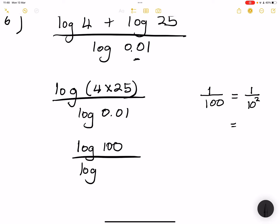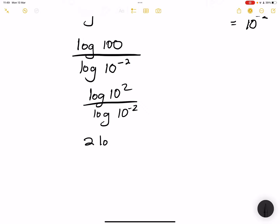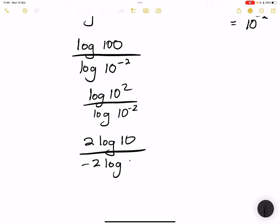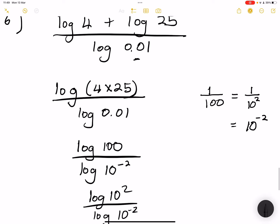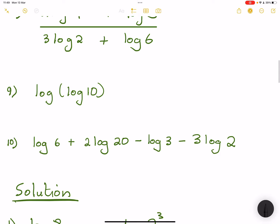So using the laws of exponents, I represent 0.01 as 10 to the exponent negative 2. At the top, log 100 is the same as 2 log 10, so that's log of 10 squared. Divided by log of 10 to the exponent negative 2. So this is 2 log 10 divided by negative 2 log of 10. We can cancel those, and 2 divided by negative 2 gives us negative 1 as our final answer.